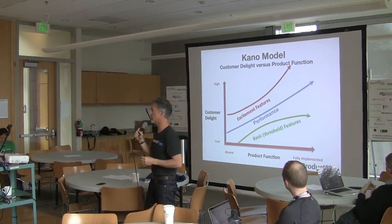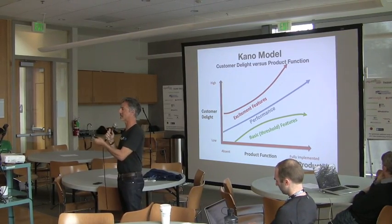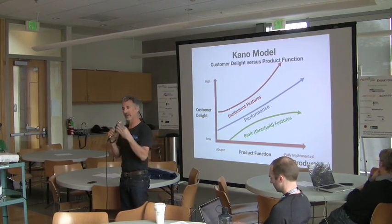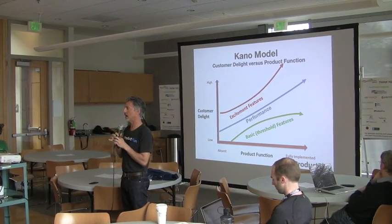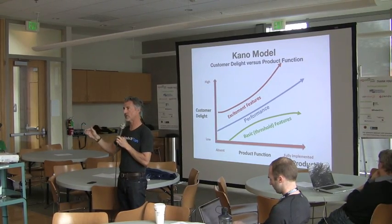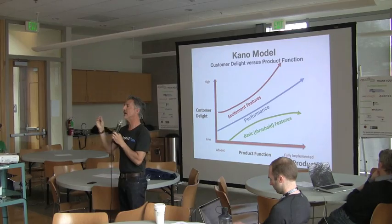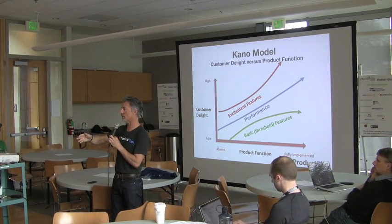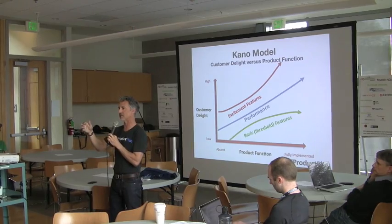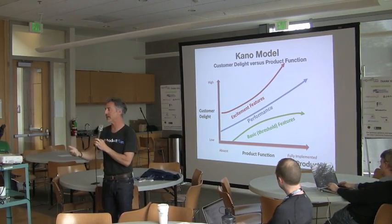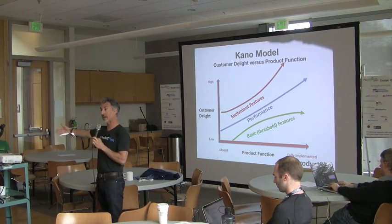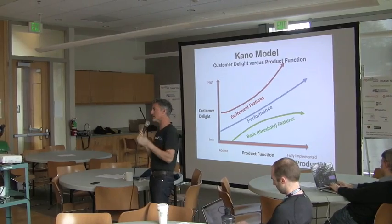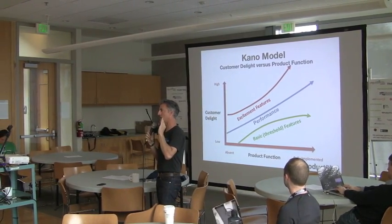Starting with the axes: on one axis we have customer delight — is it low or high customer delight? And on the other axis is product function, meaning how much investment are you putting into a particular feature. On the lower left, investment is almost nonexistent. On the far right, you've put a lot of effort and investment into that feature. You can plot different features on this grid.